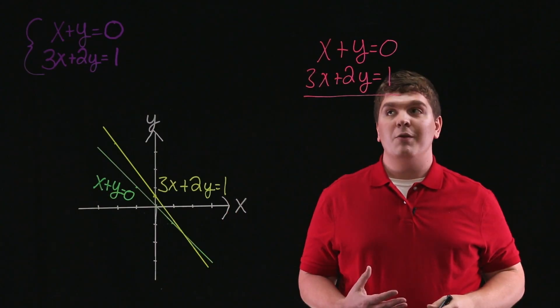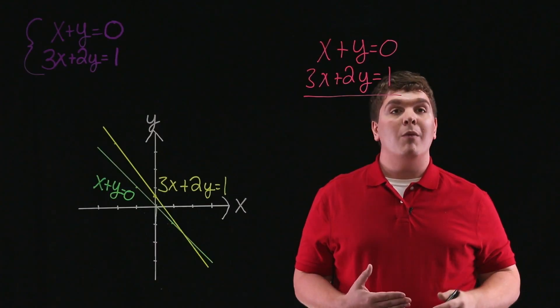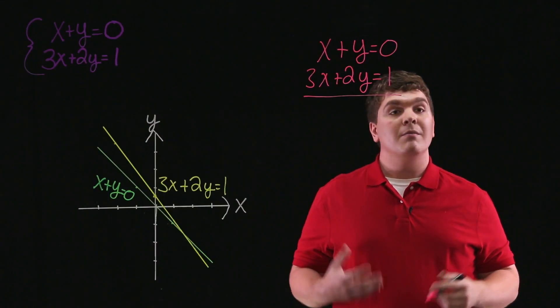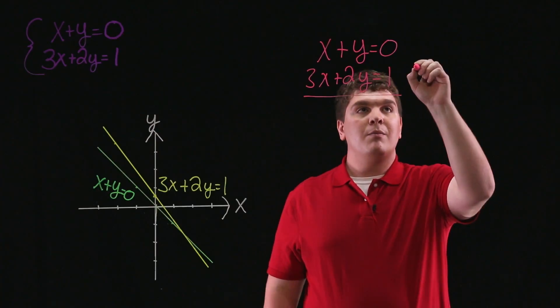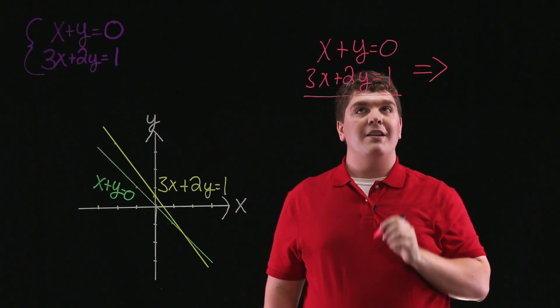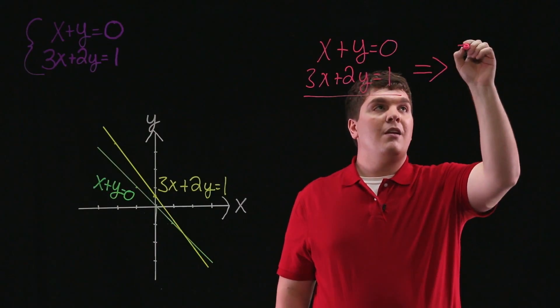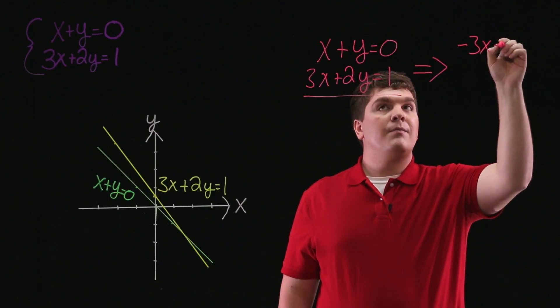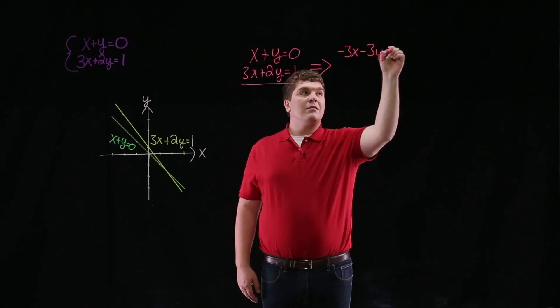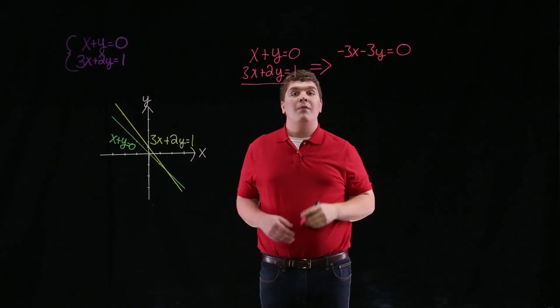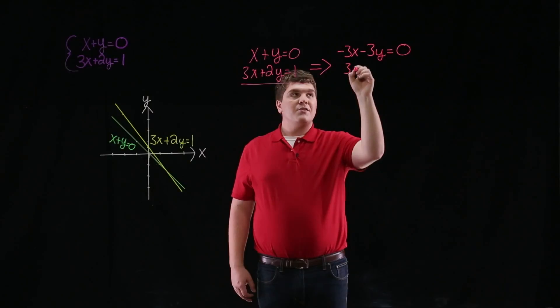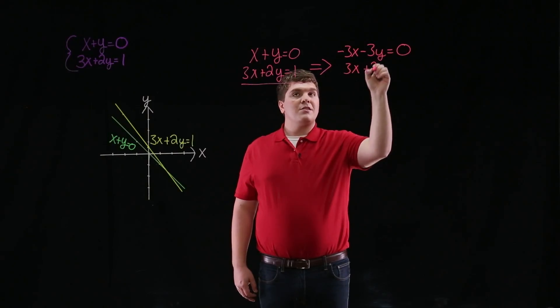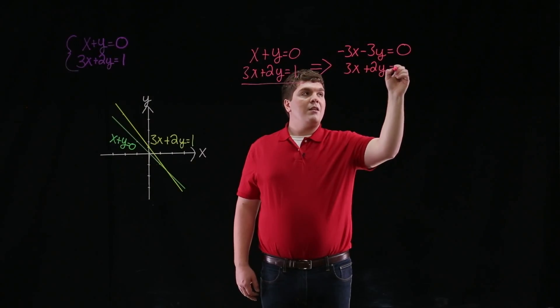Now, for this system of equations, we can begin by multiplying the top equation by negative 3 or negative 2. In this case, let's multiply the top equation by negative 3, which leaves us with negative 3x minus 3y equals 0. And we'll leave the bottom equation alone. So the bottom equation remains 3x plus 2y equals 1.